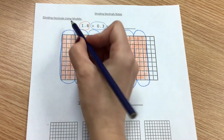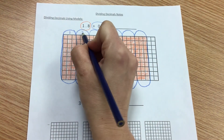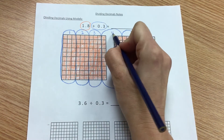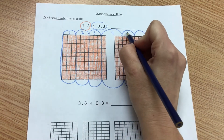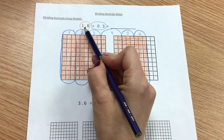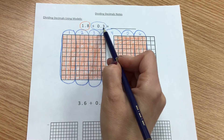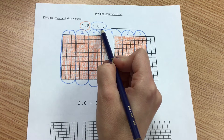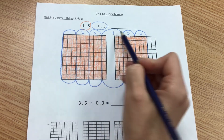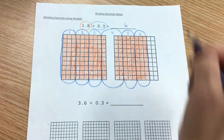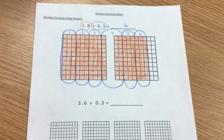And then another 3 tenths. When we are dividing, we're seeing how many equal groups there are. In this case, we're finding out how many equal groups of 3 tenths are in 1 and 8 tenths. Let's look and see: 1, 2, 3, 4, 5, 6. So if we take 1 and 8 tenths and divide it by 3 tenths, we have 6 equal groups.